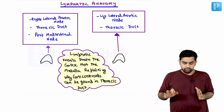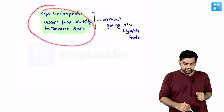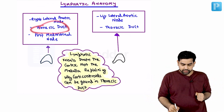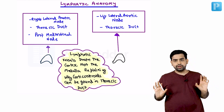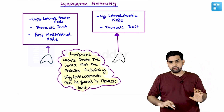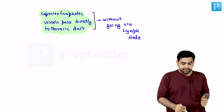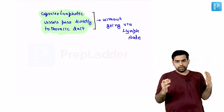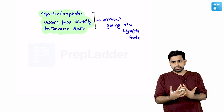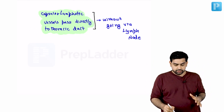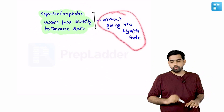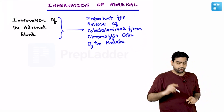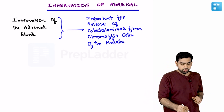The capsular lymphatic vessels pass directly to the thoracic duct. It is not the entire cortex draining into the thoracic duct — rather, it is the capsular lymphatic channels around the adrenal gland that enter the thoracic duct directly without going through the lymph nodes.